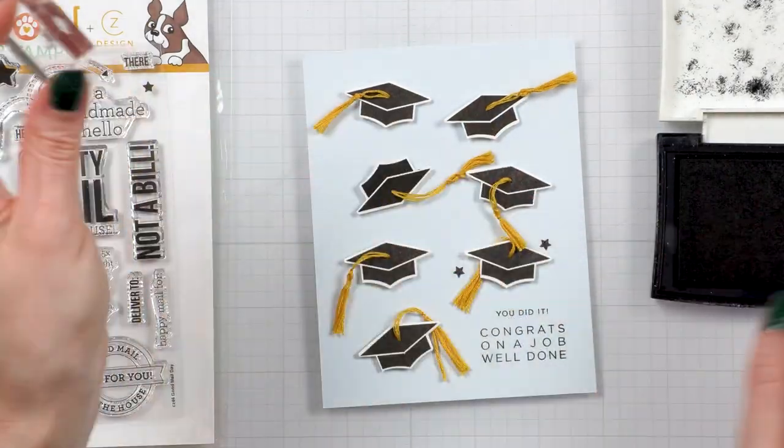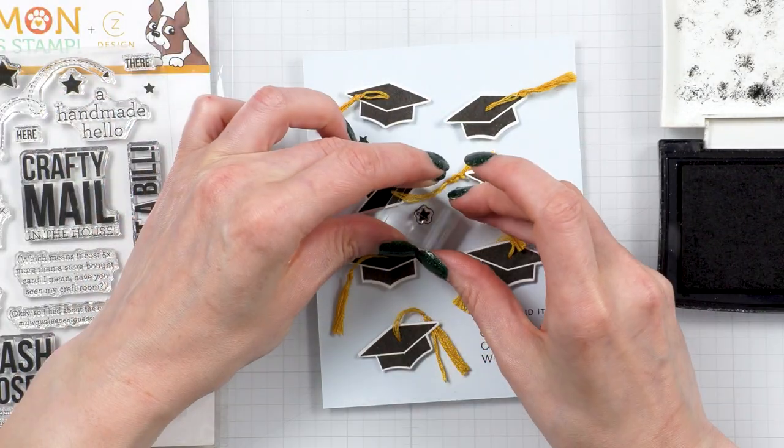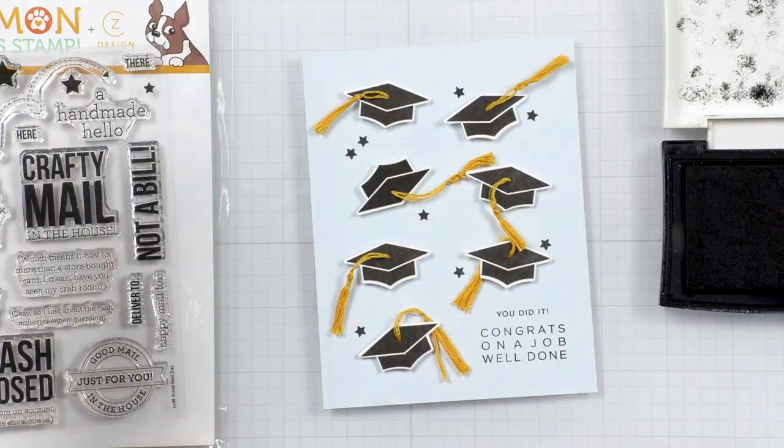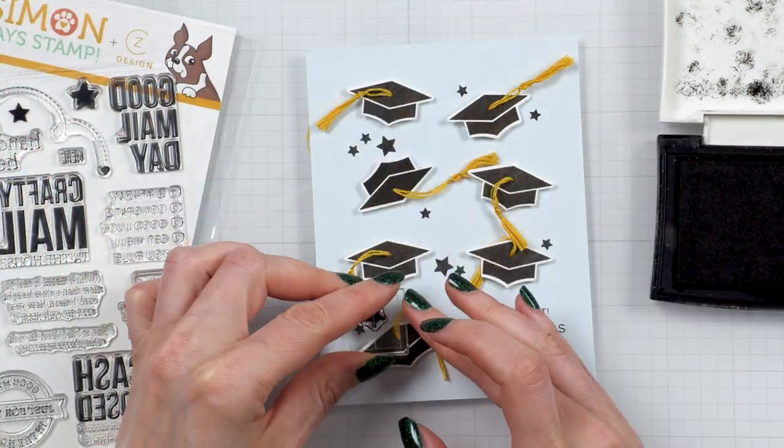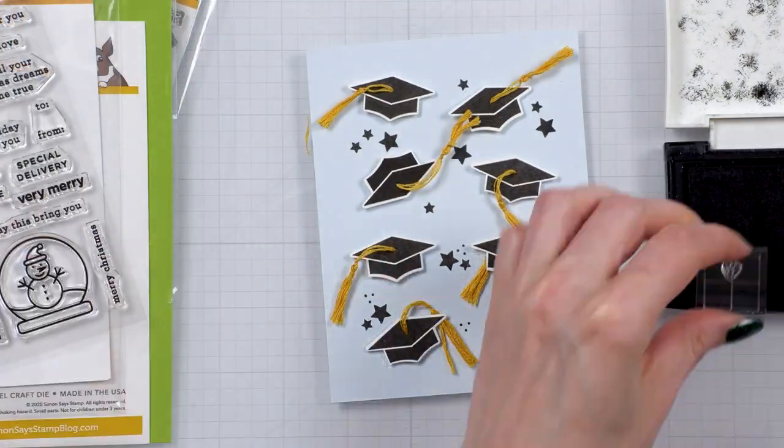Now I wanted to add some fillers to my background. So I looked through my stash for some small images that I could stamp in between the caps. I stamped some smaller and then some larger stars. They filled the background nicely and I also added a three dot cluster stamped next to the stars.